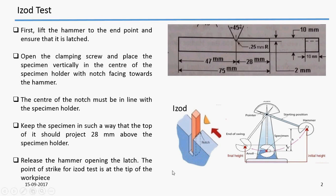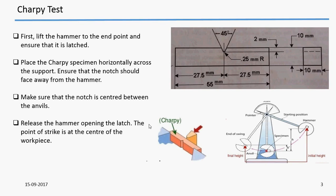In Charpy test, you can see that the notch is exactly at the center. The main difference is that the sample specimen is kept horizontal instead of vertical as we have seen in Izod test.